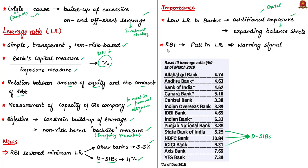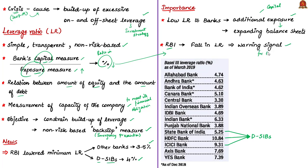Why is leverage ratio so important to RBI? The leverage ratio is computed as capital in the numerator divided by the banks' exposures in the denominator. Hence, a rise in exposure leads to a fall in the leverage ratio. So, if a bank's leverage ratio falls below RBI's threshold, it will serve as a warning signal for the regulator — the Reserve Bank of India.